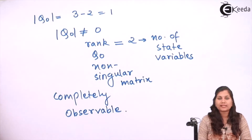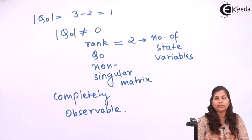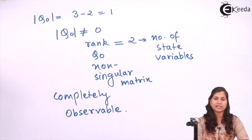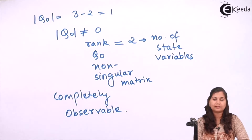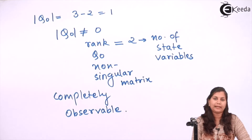So in this question we tested the controllability and observability of a system whose state space model was given, and found the system is completely controllable and observable. You can solve similar questions by checking the rank of QC and Q0 matrices. If the rank equals the number of state variables and both matrices are non-singular, the system is completely controllable and observable; otherwise it is uncontrollable and unobservable.